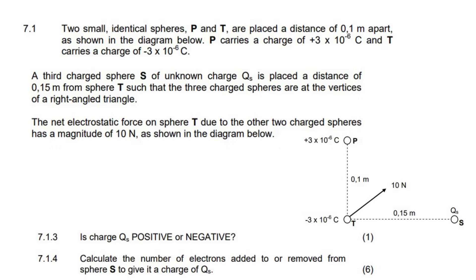Now they tell us that a third charge S of unknown charge is placed at a distance of 0.15 meters, such that the three charges are the vertices of a right-angled triangle. The net electrostatic force on T due to the other two is 10 newtons. The first question says, is charge Q positive or negative?